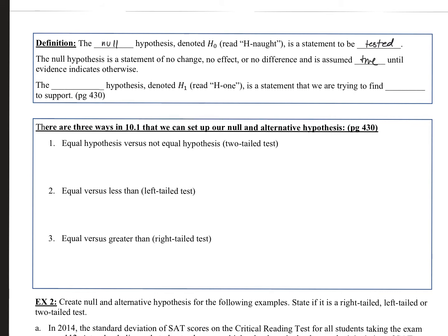The alternative hypothesis, denoted H₁, is a statement we are trying to find evidence to support. For example, we might be trying to find evidence that our friend is cheating — that the probability of tails is not a normal fair-coin probability. That would be our alternative hypothesis.